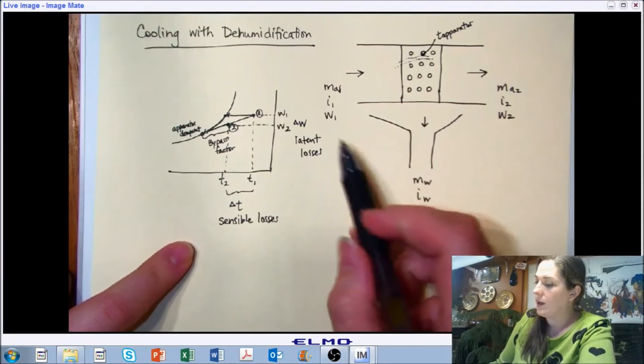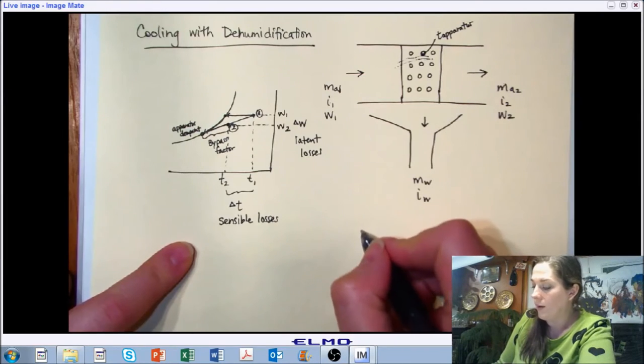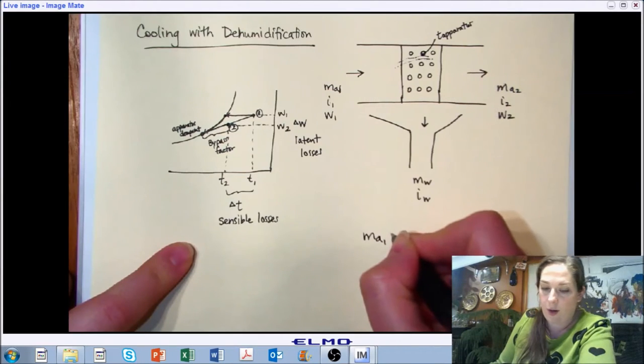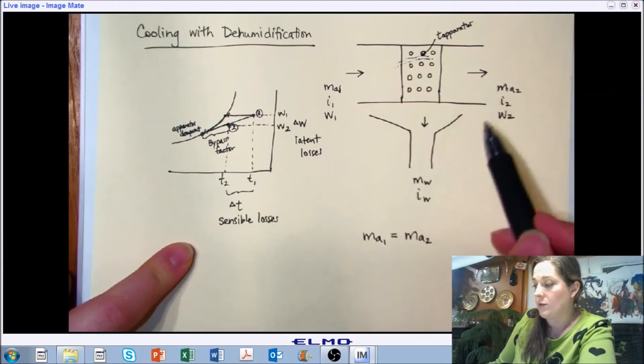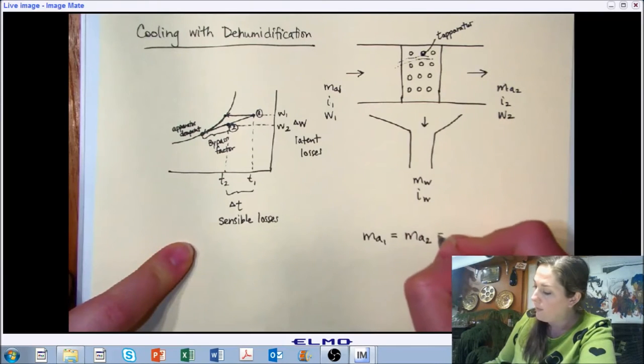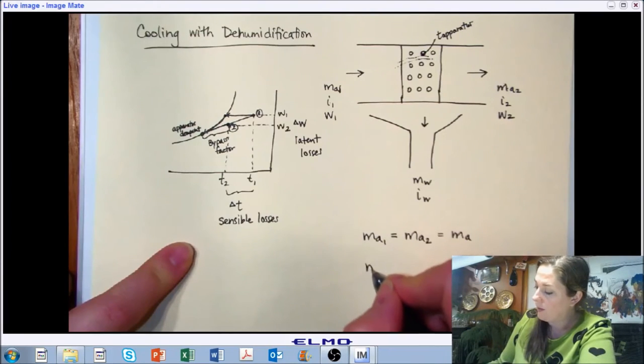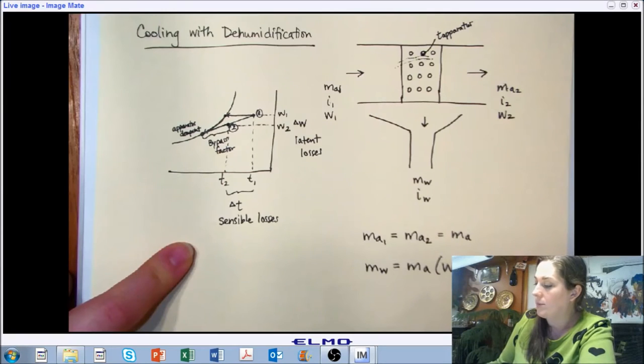When we think about our inlet, our outlet, and our moisture, we still have to think about conservation of energy, conservation of mass. Our mass of air is the same for both. The properties of the air have changed, but we still have the same amount of air coming in and leaving. But now, we have removed some of the moisture. The amount of moisture that we removed is related to the amount of air times the change in the humidity ratio or the absolute moisture of that air.